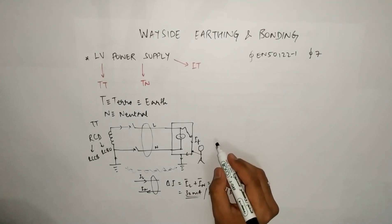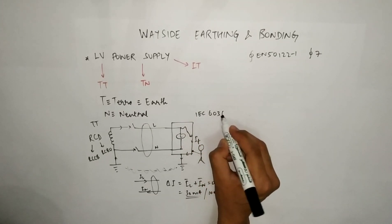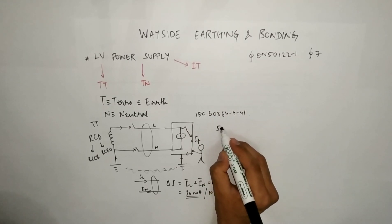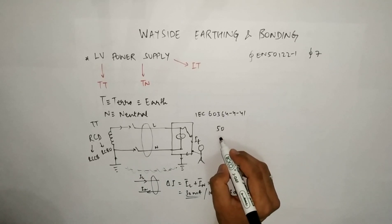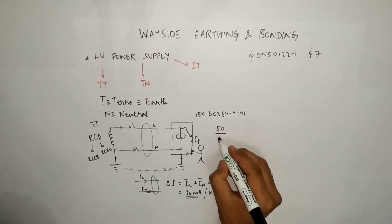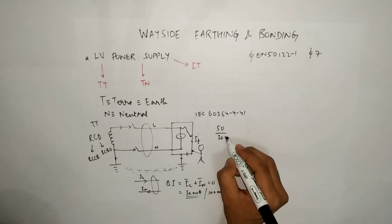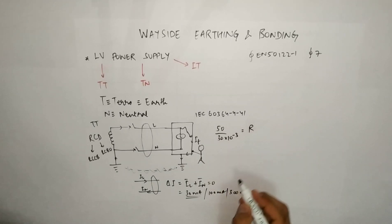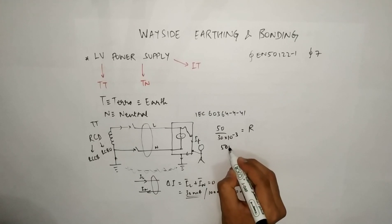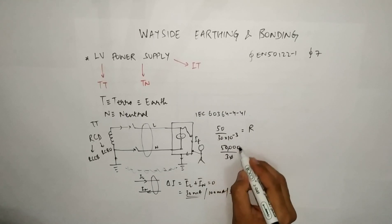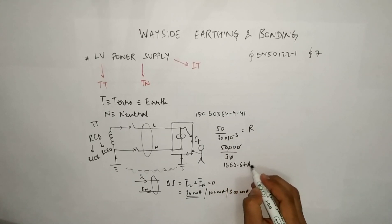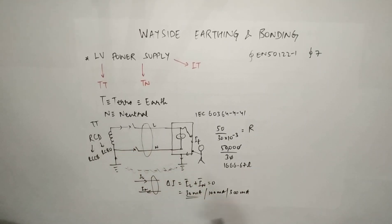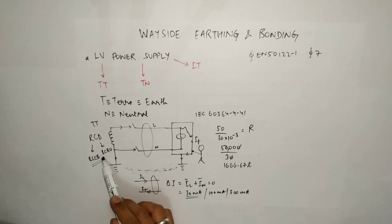As per IEC 60364-4-41, the safe voltage for an AC system for a person is around 50 volts. If the voltage is 50 V and the current flowing is 30 mA, you can calculate the resistance: 50 divided by 30×10⁻³ gives a value of 1,666.67 ohms, which is very high. So even if the resistance of this path is very high, the RCCB will still trip. That is why we always recommend going for an RCCB.